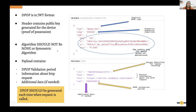In the DPoP payload, there are four mandatory fields. The first is a unique identifier (jti) which helps mitigate replay attacks by ensuring each DPoP is not reused. The next two are 'htm' and 'htu', which provide information about the request being made — the HTTP method (POST or GET) and the endpoint URL.